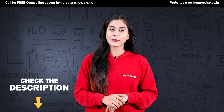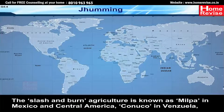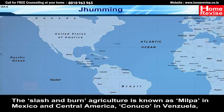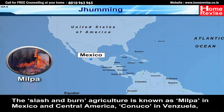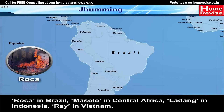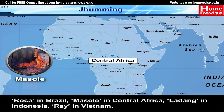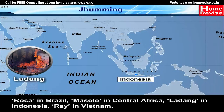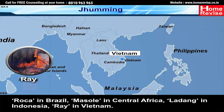This slash-and-burn agriculture is known as Milpa in Mexico and Central America; Conuco in Venezuela; Roca in Brazil; Masole in Central Africa; Ladang in Indonesia; and Ray in Vietnam.